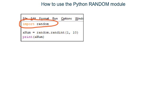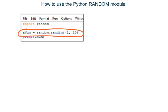To create a random integer, we write the code random.randint and put in brackets the range of numbers that we want our random integer to come from. Here I have put 1, 10 in the brackets, so Python will choose a random number from between 1 and 10 when the program is run. So this line of code creates a variable named anum and stores inside it a single random integer from between 1 and 10.